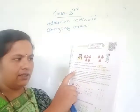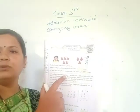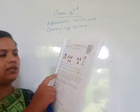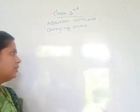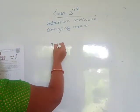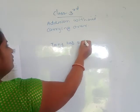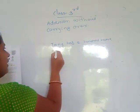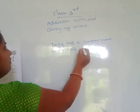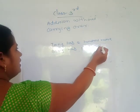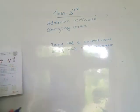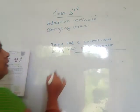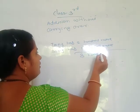Next example: Tonu has 2 hundred-rupee notes, 1 ten-rupee note, and 5 one-rupee coins, and Sonu has 1 hundred-rupee note and 1 ten-rupee note. Tonu has 200 rupees in hundred-rupee notes and Sonu has 100, so total hundred-rupee notes give us 300 rupees.